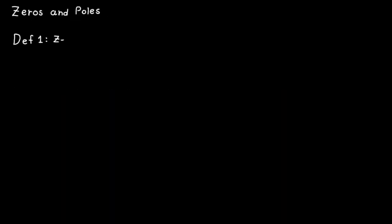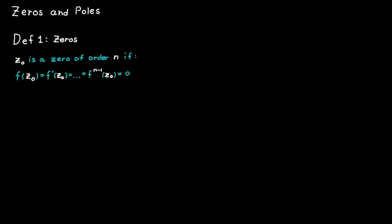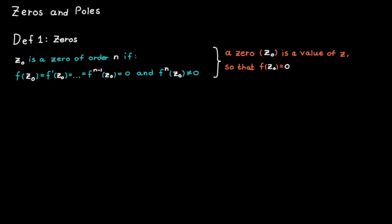The first definition is about zeros and states that a point C0 in the complex plane is a zero of order n for some analytic function f, if the function and all its derivatives up to order n minus one evaluated at C0 is equal to zero, but the derivative of order n evaluated at C0 is not equal to zero. In short, a zero is a value of C so that the function is equal to zero. To determine the order of the zero, we just check how many times we need to derive the function until it's not equal to zero anymore.